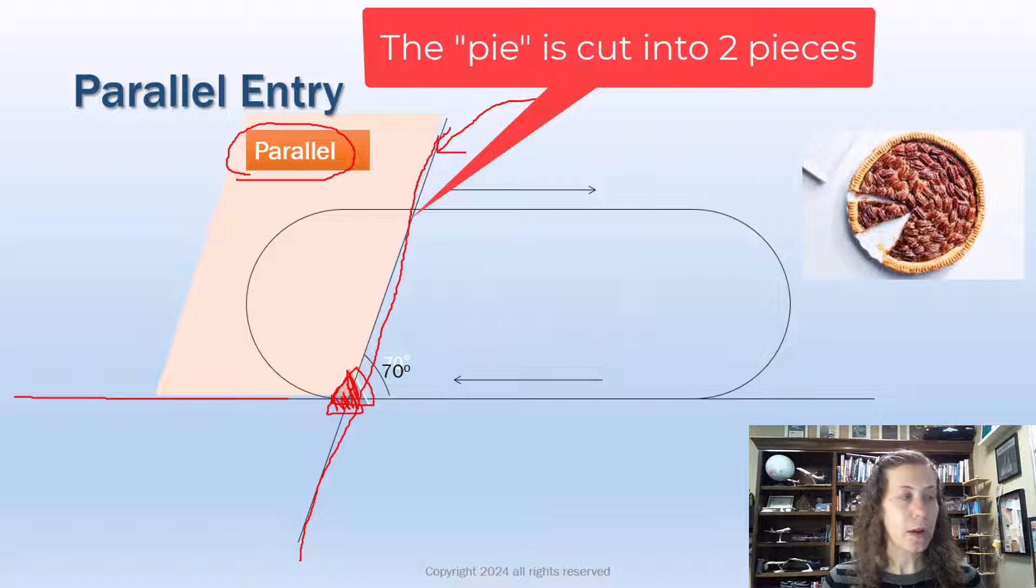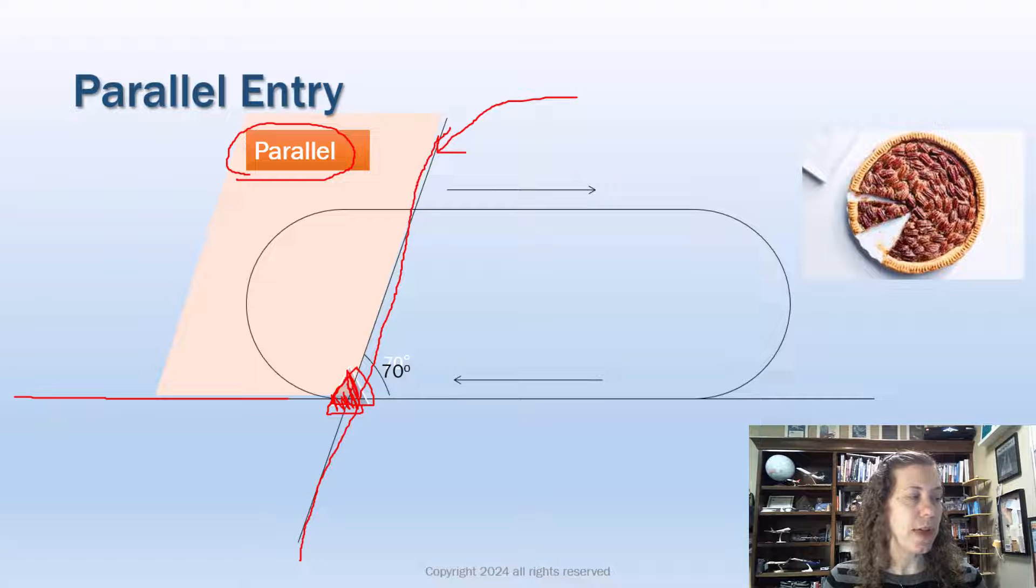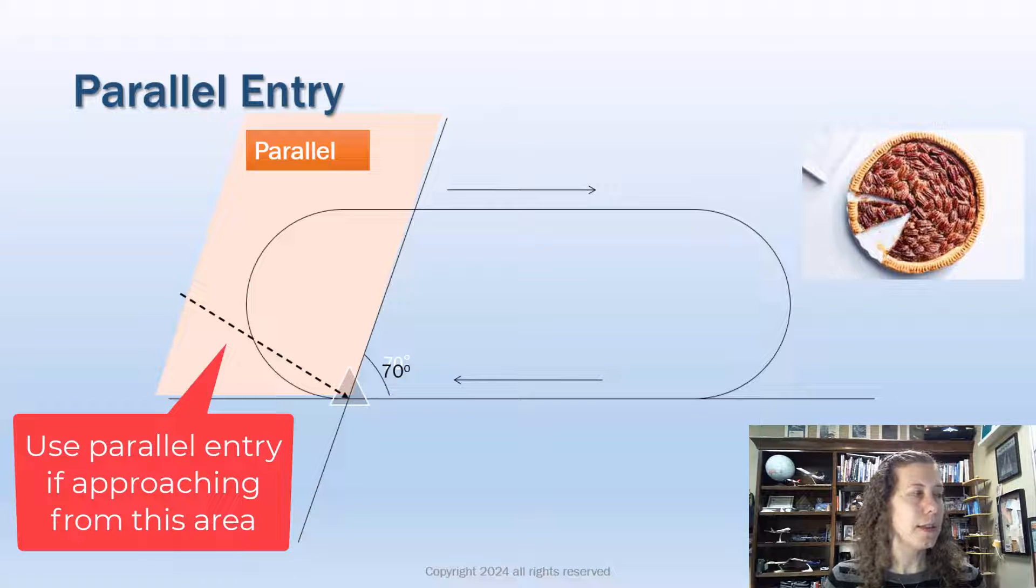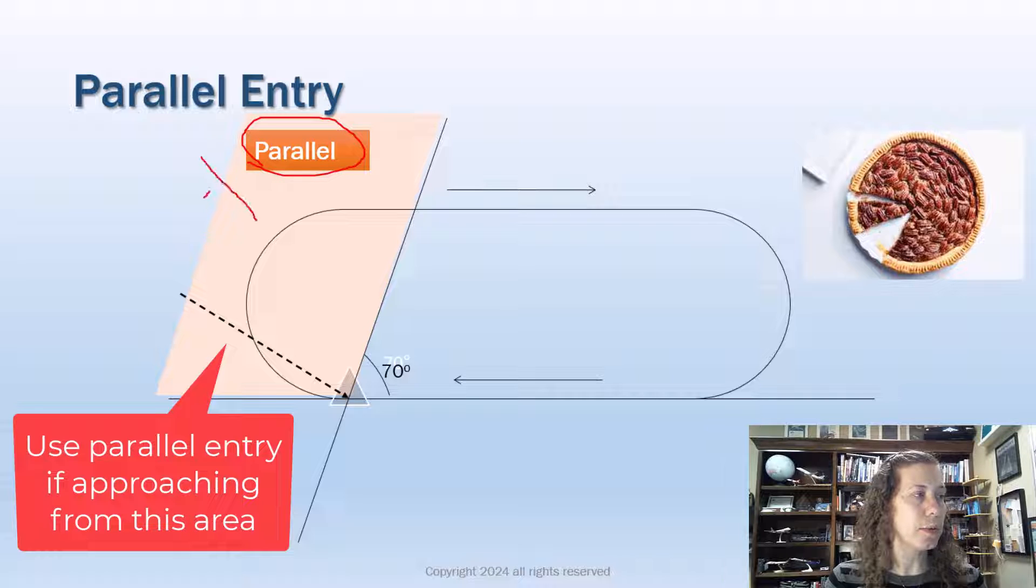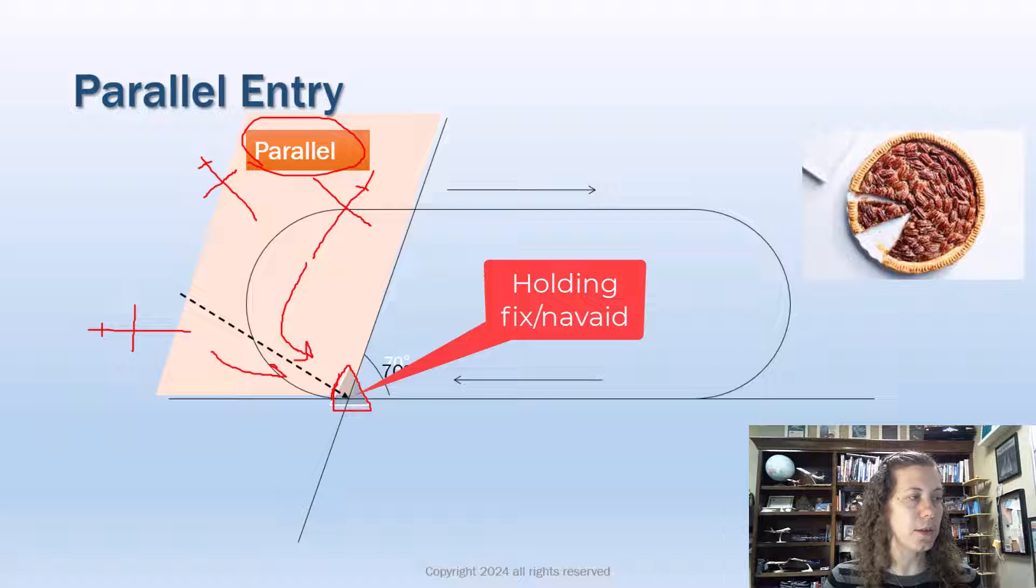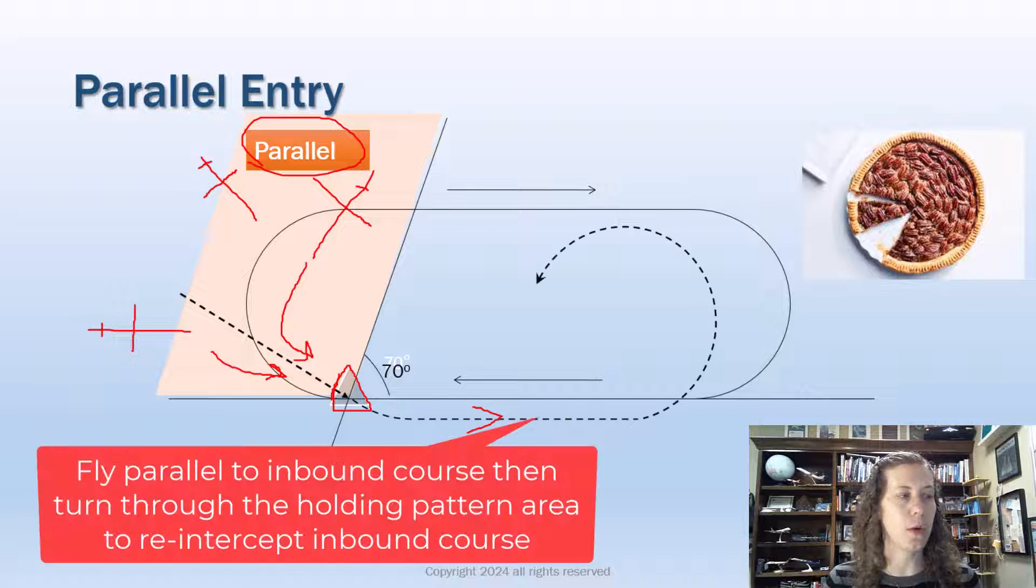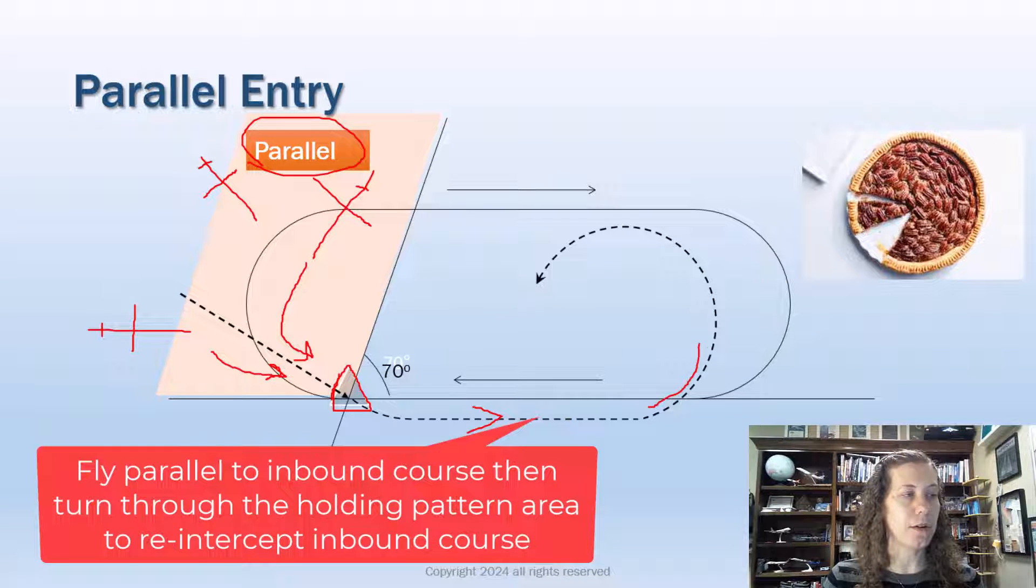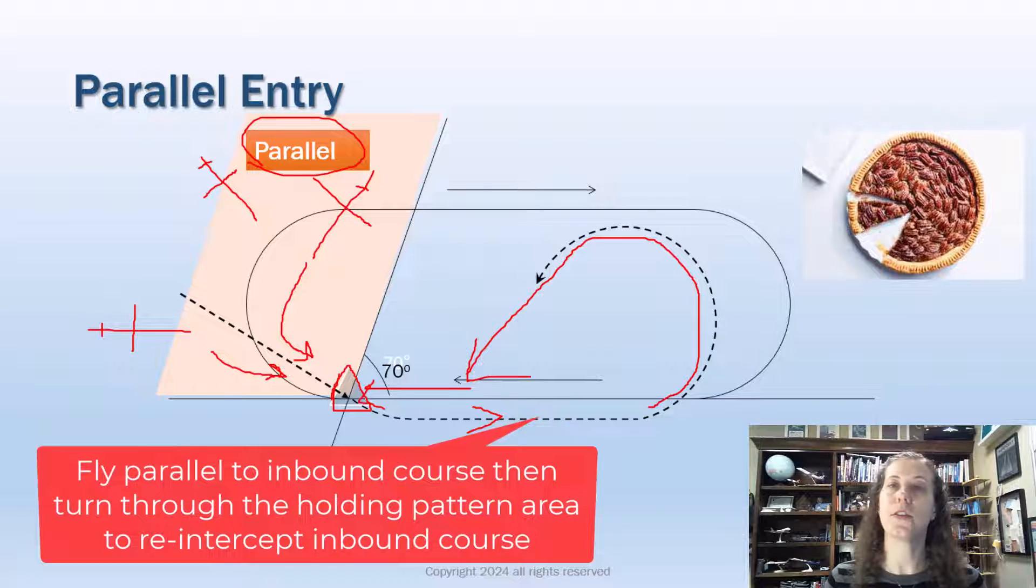The parallel entry works and we use that if our airplane is in this area labeled parallel. So if my airplane is over here or approaching the fix from this direction or up in this direction, what we're supposed to do is fly to the fix. We then fly parallel, slightly on the wrong side, very slightly on the wrong side, opposite the traffic flow, and then we would turn the airplane back around going inbound and then proceed to the fix and enter our holding pattern.